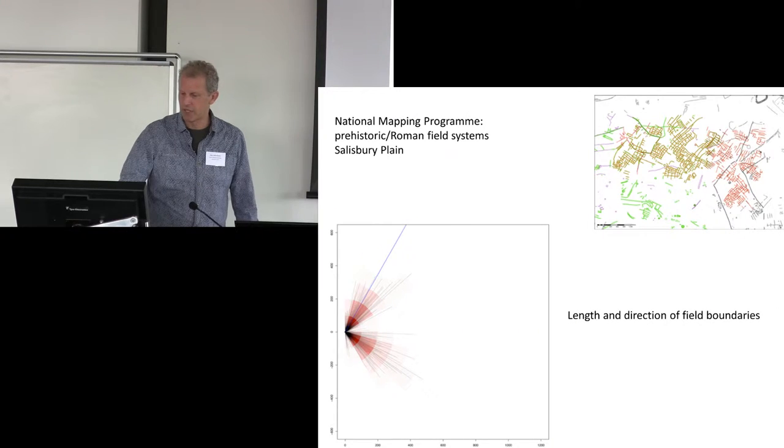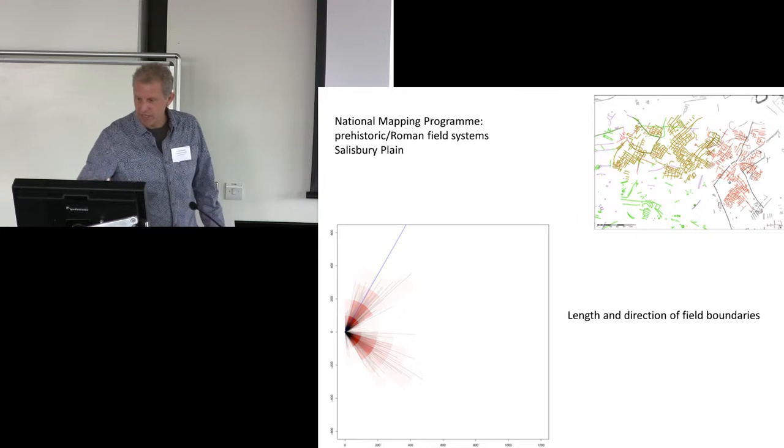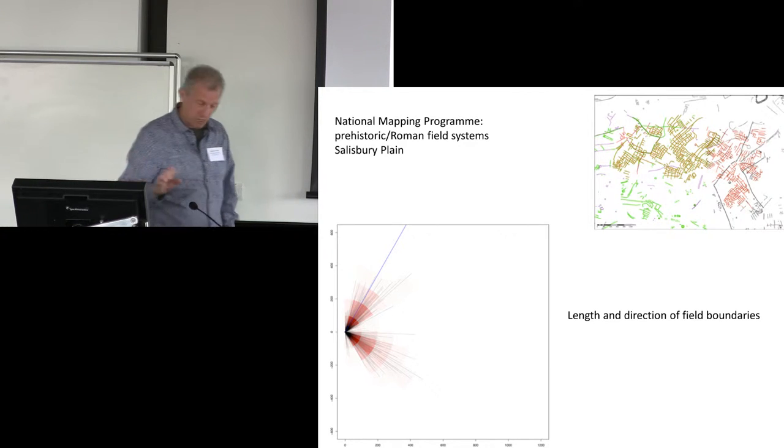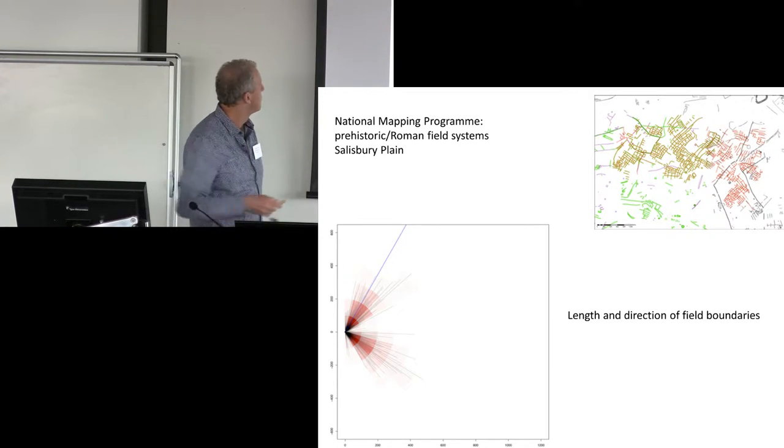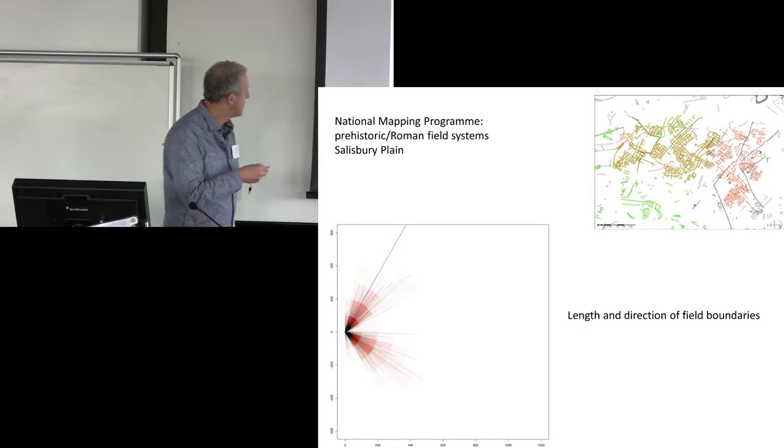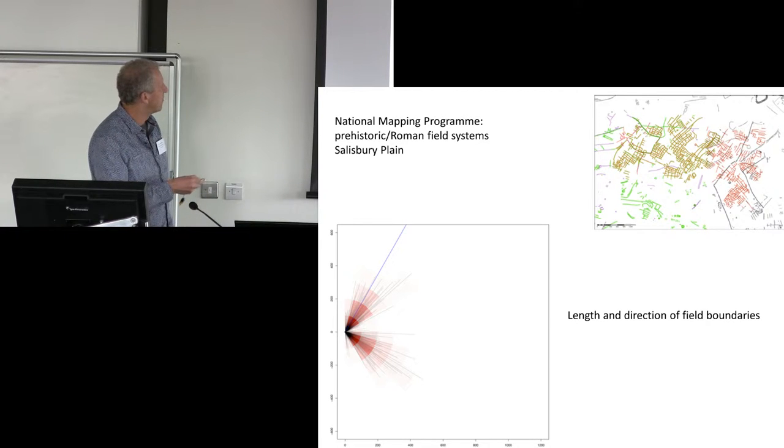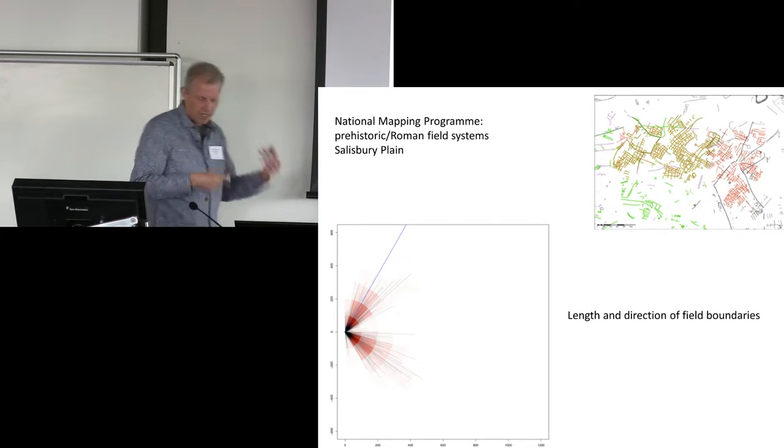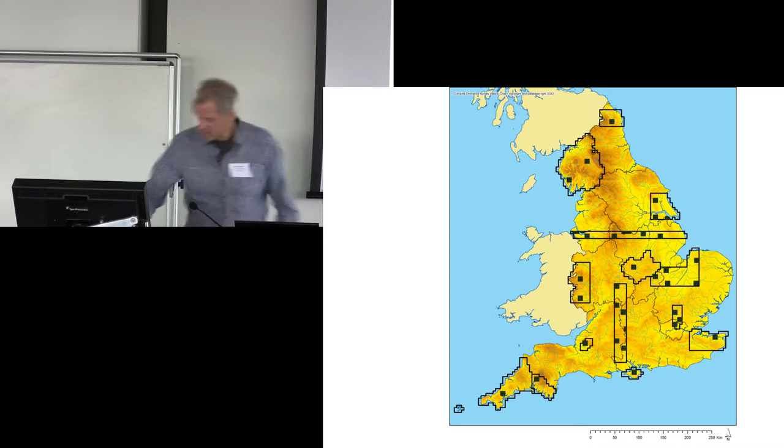And Chris Green has done some fantastic things on specific elements of the database, and this is a little bit of the NMP for Salisbury Plain, and he's looked at things like length and direction of field boundaries. So there are some specific forms of analyses.